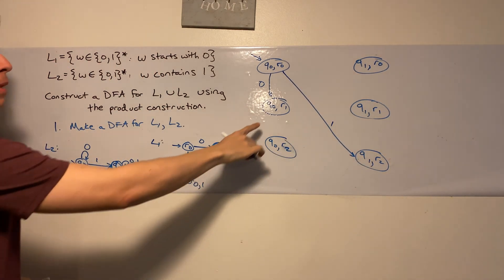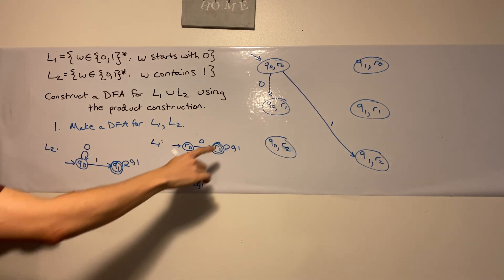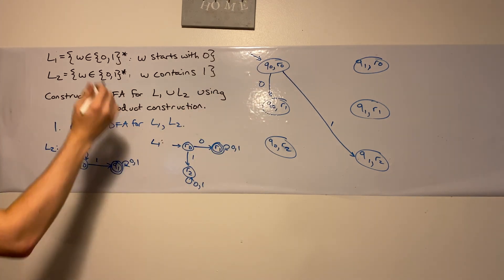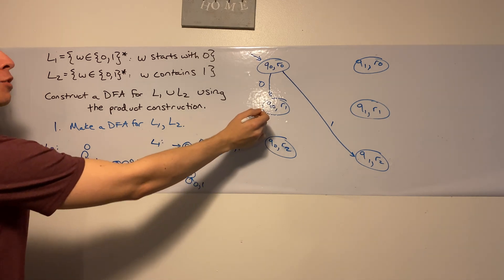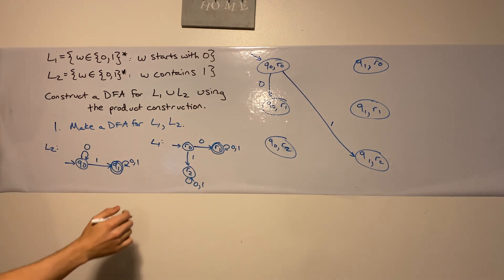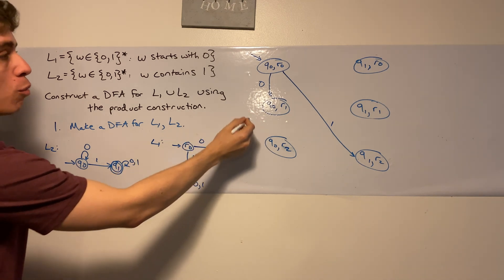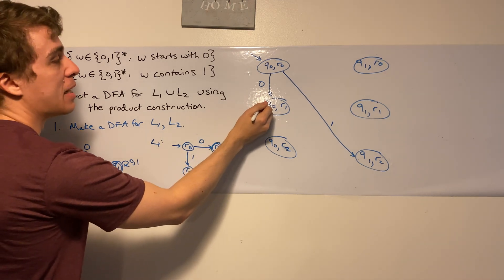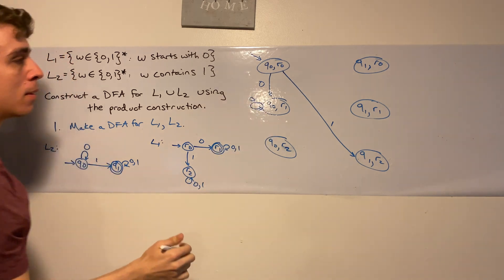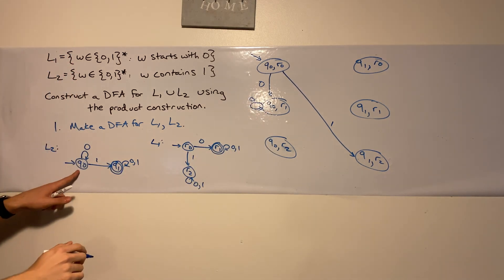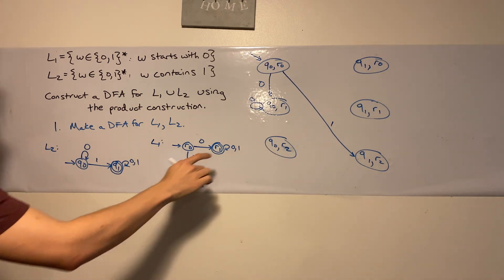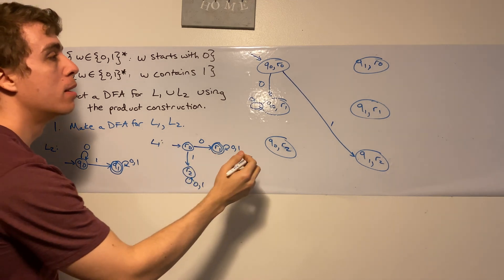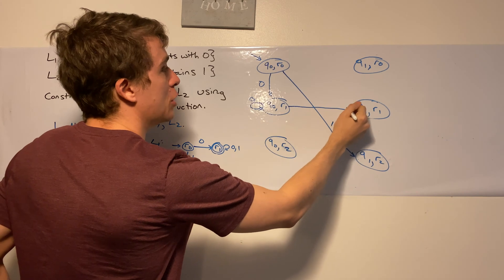So now let's do another pair. q0, r1. No matter what I do in this left column on 0, I'm going to stay in the left column because of the self-loop here. So q0, r1, I'm going to be q0, no matter what. So what does r1 do on 0? It stays where it is, because r1 self-loops on 0. So that means I need to self-loop here. And then what does it do on 1? q0 always goes to q1, the right column, and r1 stays where it is, because again, it has another self-loop on 1. So I'm going to have a 1 transition over to here.